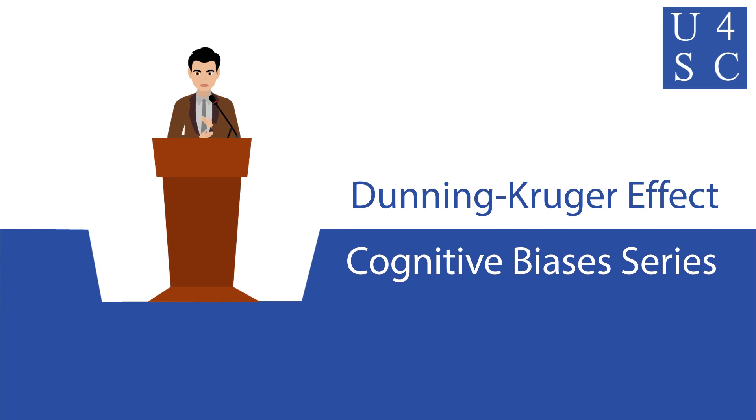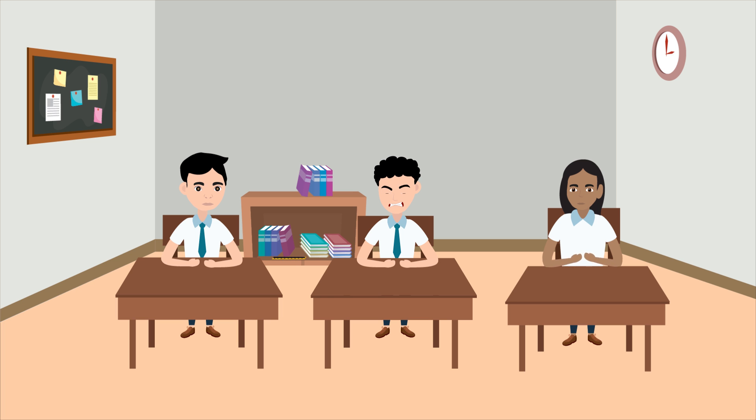Academy for Social Change presents The Dunning-Kruger Effect. You get assigned a group for a school project. You're working with Jimmy, a stubborn classmate who loves to argue.